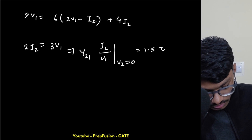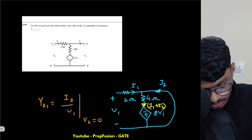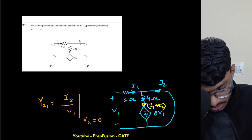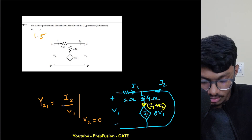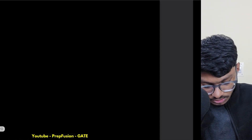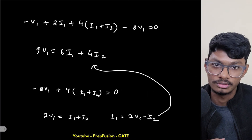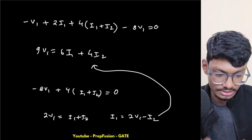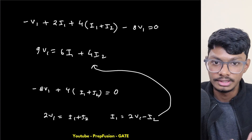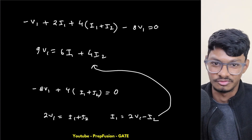So Y21 = 1.5 Siemens — that is the answer to this question. These are the solutions for the EC branch network theory questions. Next I will solve the EE and IN branches as well. Thank you for watching.